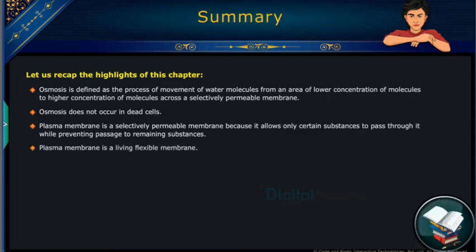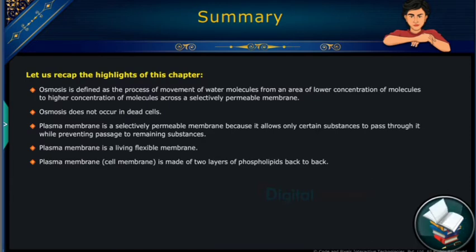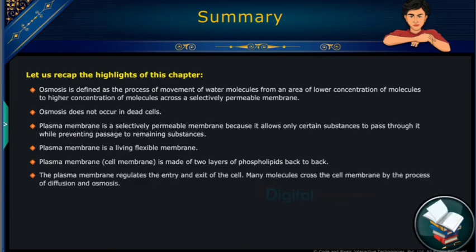Plasma membrane is a living flexible membrane. Plasma membrane or cell membrane is made of two layers of phospholipids back-to-back. The plasma membrane regulates the entry and exit of the cell.